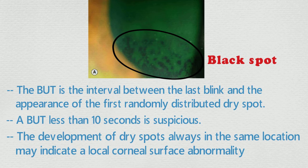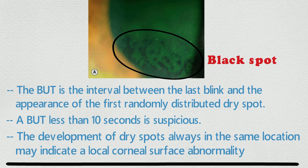The development of dry spots always in the same location may indicate a local corneal surface abnormality.